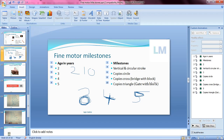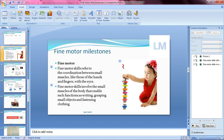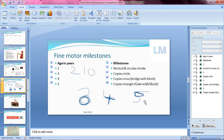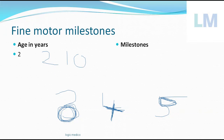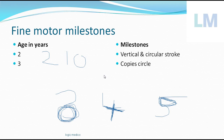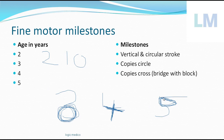At five years of age, the child is able to copy a triangle — demonstrated on screen. Also at five years, the child builds a gate with blocks, like constructing a home entrance, and may even narrate a story about it. To summarize: at 2 years — vertical or circular stroke; at 3 years — copy a circle; at 4 years — copy a cross and build a bridge; at 5 years — copy a triangle and build a gate.